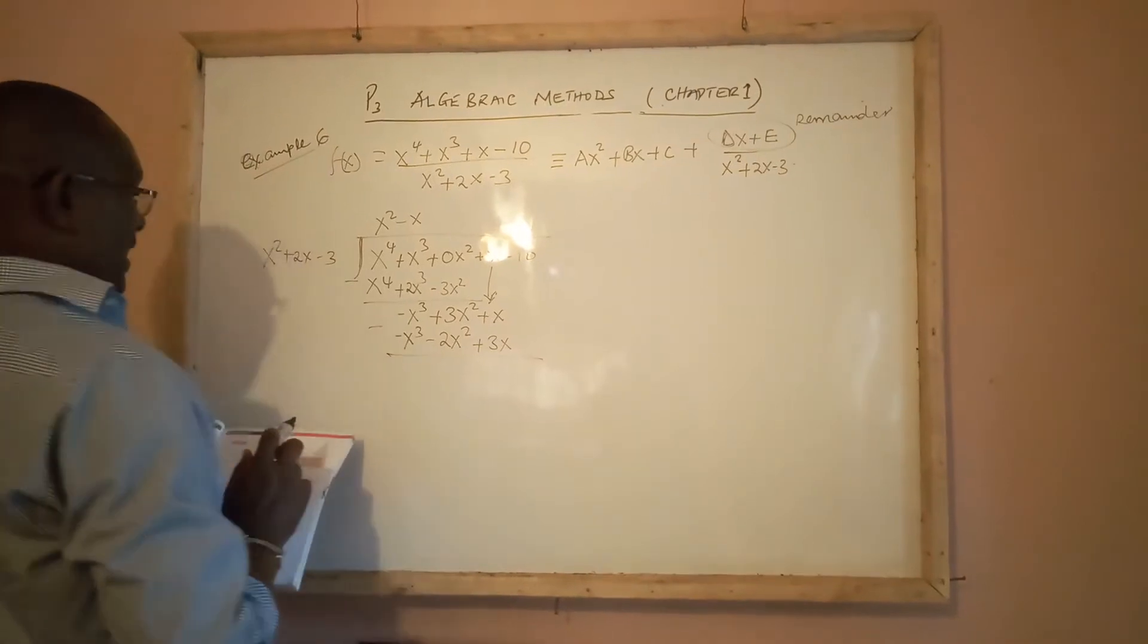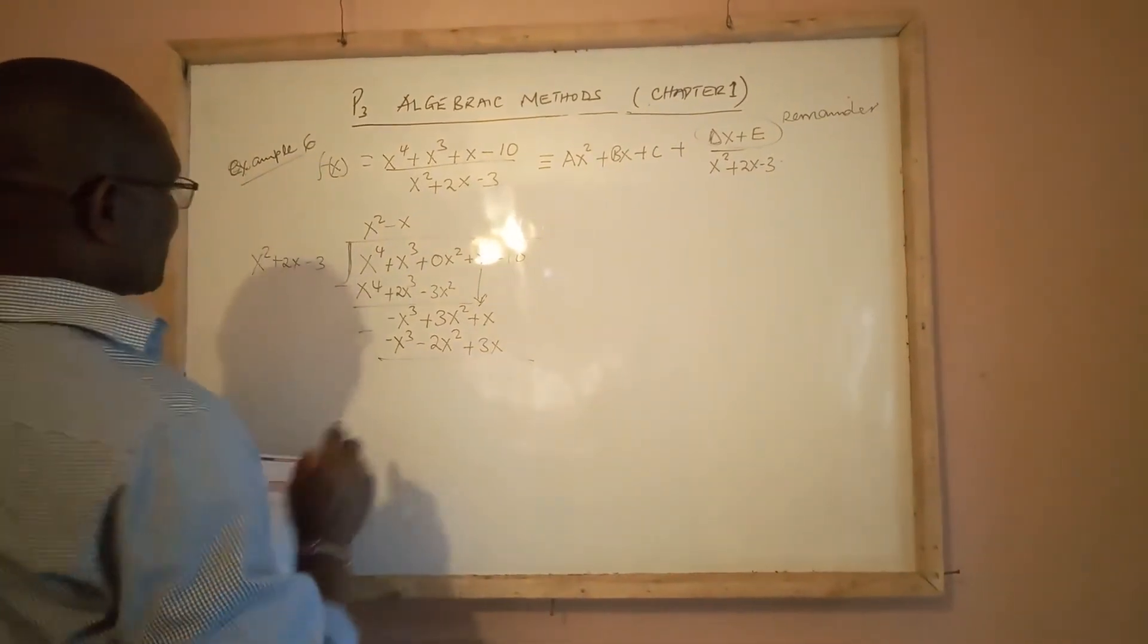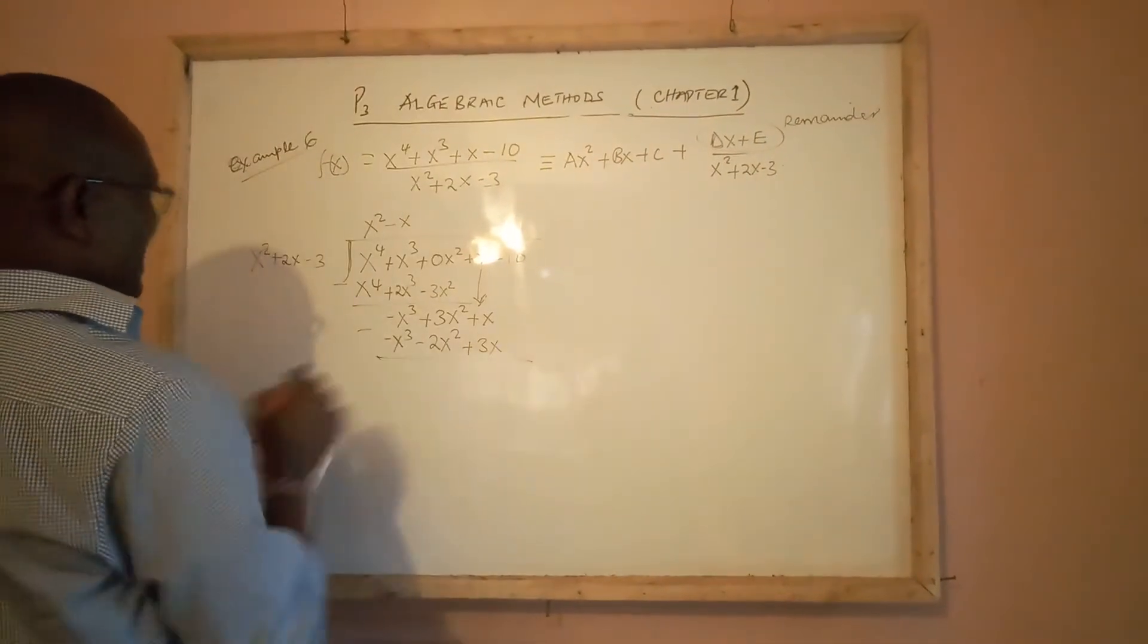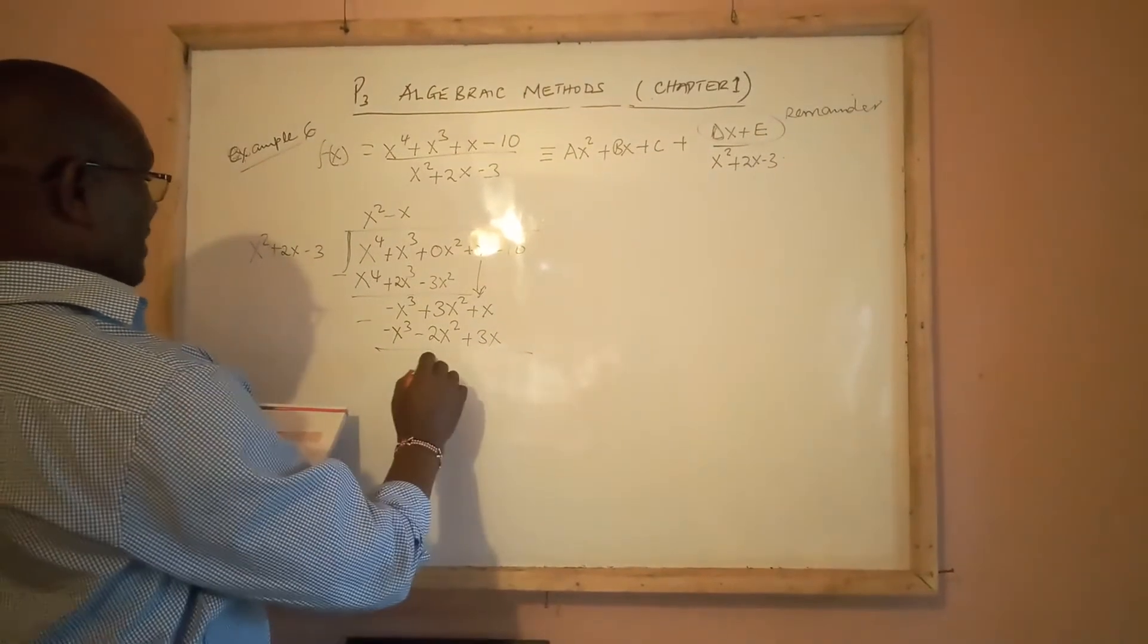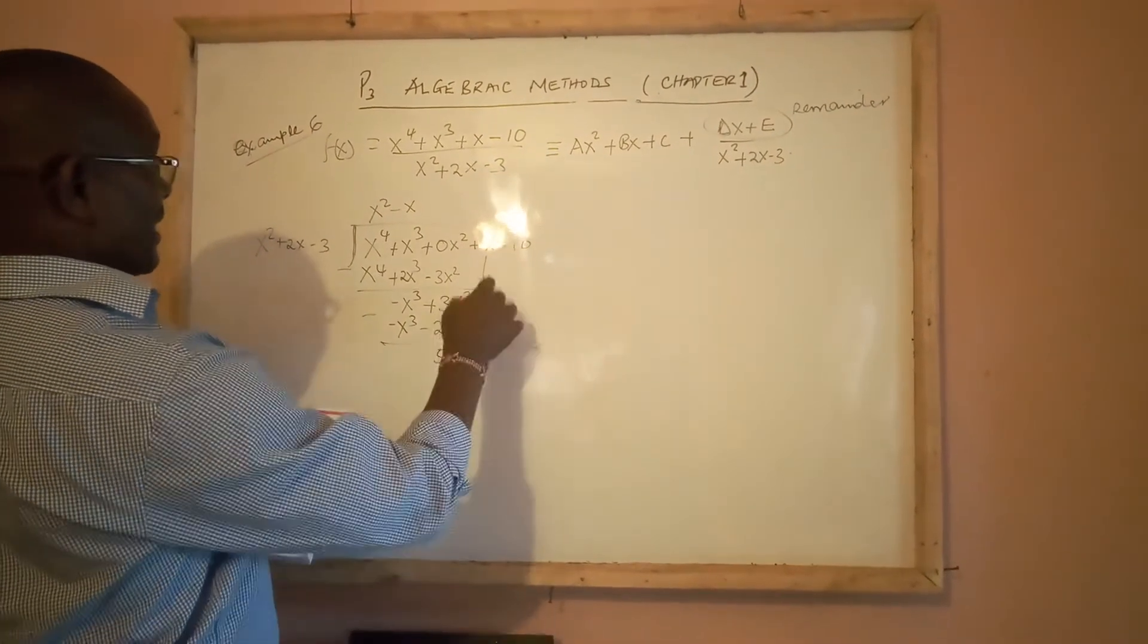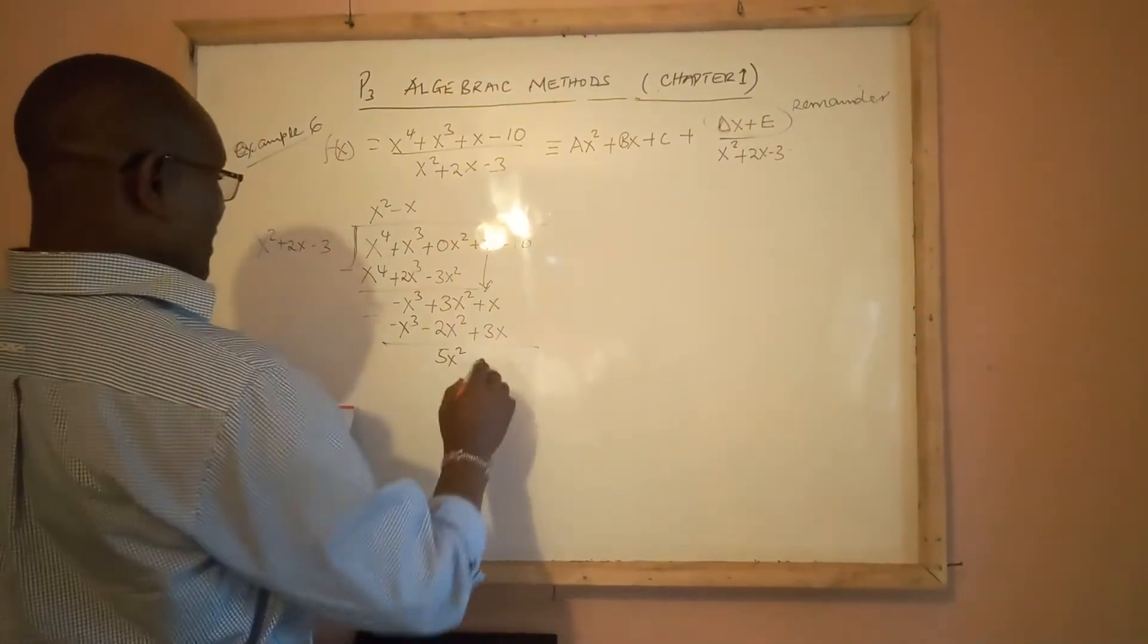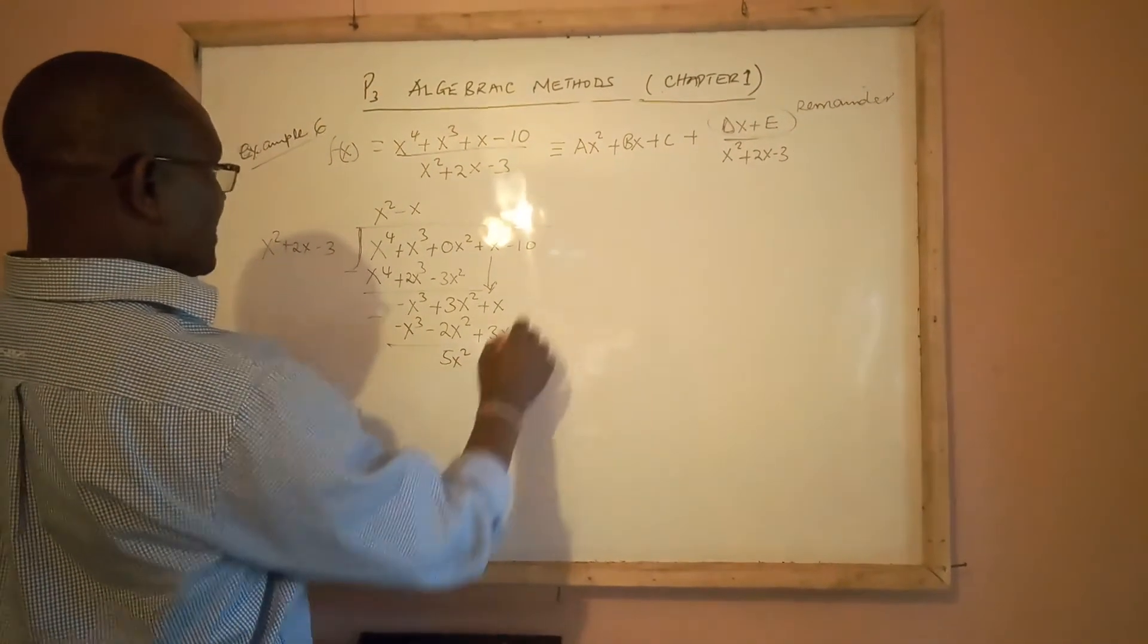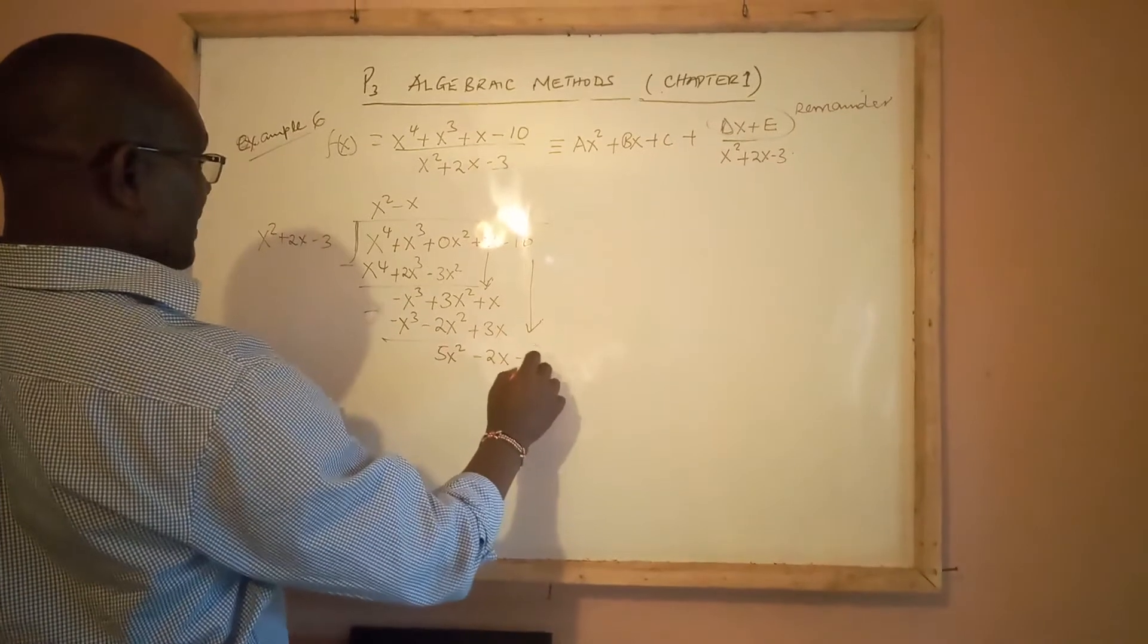Again, -x^3 minus minus x^3 is 0. 3x^2 minus minus 2x^2 is 5x^2. And x minus 3x is -2x. You drop down -10.